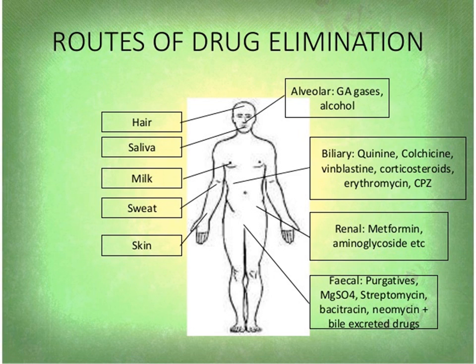Apart from unabsorbed fractions, most of the drugs present in feces are derived from bile. Exhaled air is also another route — gases and volatile liquids, especially general anesthetics like pyraldehydes and other alcohols, also get eliminated by the lungs. Saliva and sweat are of minor importance for drug excretion.